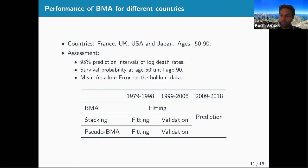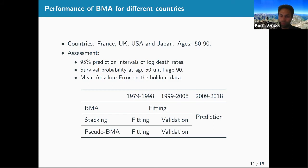In the second part of the paper, we look at the weights obtained for different countries: France, UK, USA, and Japan. We evaluate performance through prediction intervals, survival probabilities, and mean absolute error on the holdout data. For BMA there is no validation split — just fitting then prediction. For stacking and pseudo-BMA, we first split into fitting and validation sets, and then examine 10-years-ahead prediction performance.